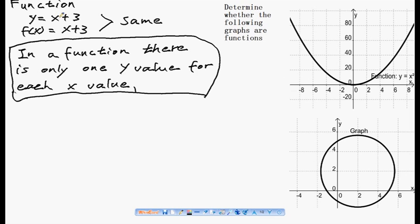For instance, when x is 1, 1 plus 3 is 4, y is 4, y cannot be any other number. When x is 2, 2 plus 3 is 5, and y is 5, and y is certainly 5, it cannot be any other number.